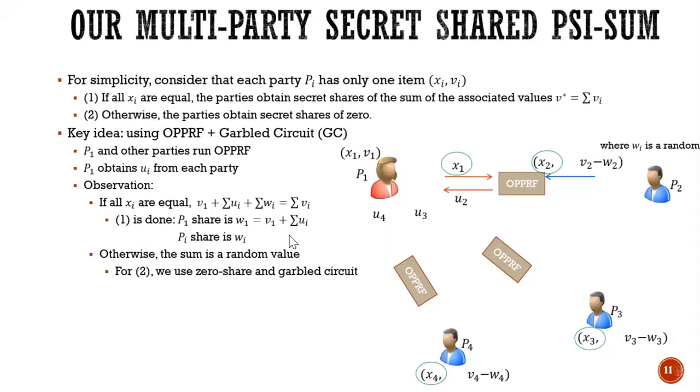So the more challenging thing here is that if all XIs are not equal, the sum right now is a random value because OPPRF. So we really need that they obtain the secret share of zero. So for two, we use zero shares and the garbled circuit.